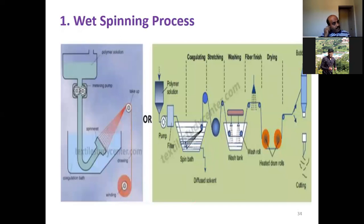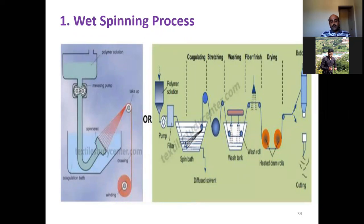After extrusion, the solvent is removed in a liquid coagulation medium. Finally, the filament yarn is either immediately wound or further treated for certain desired characteristics. Looking at the diagram, we have the polymer solution going through extrusion at the spinneret, then through the coagulation bath, then stretching into wires or washing, followed by fiber finishing and drying.